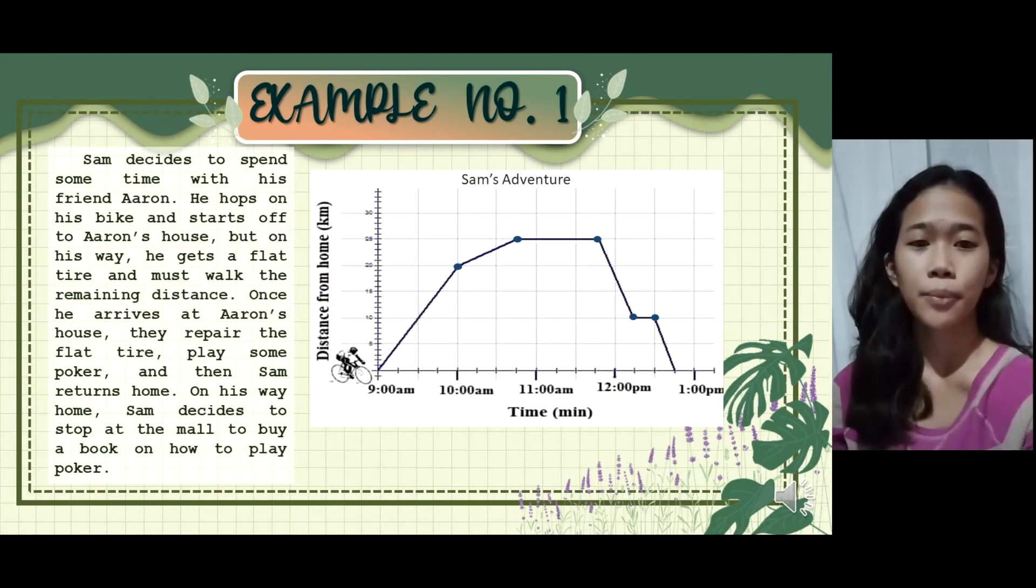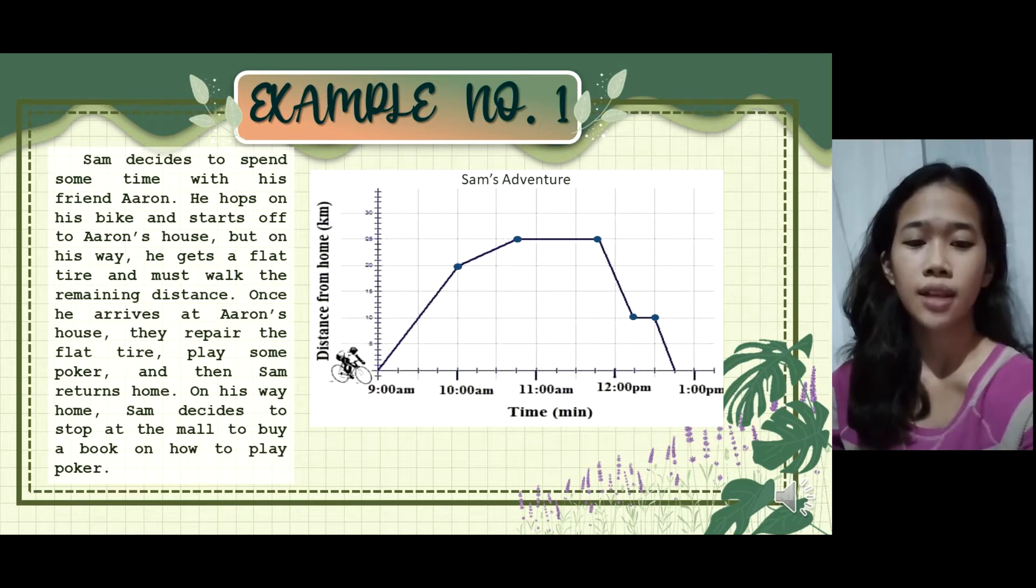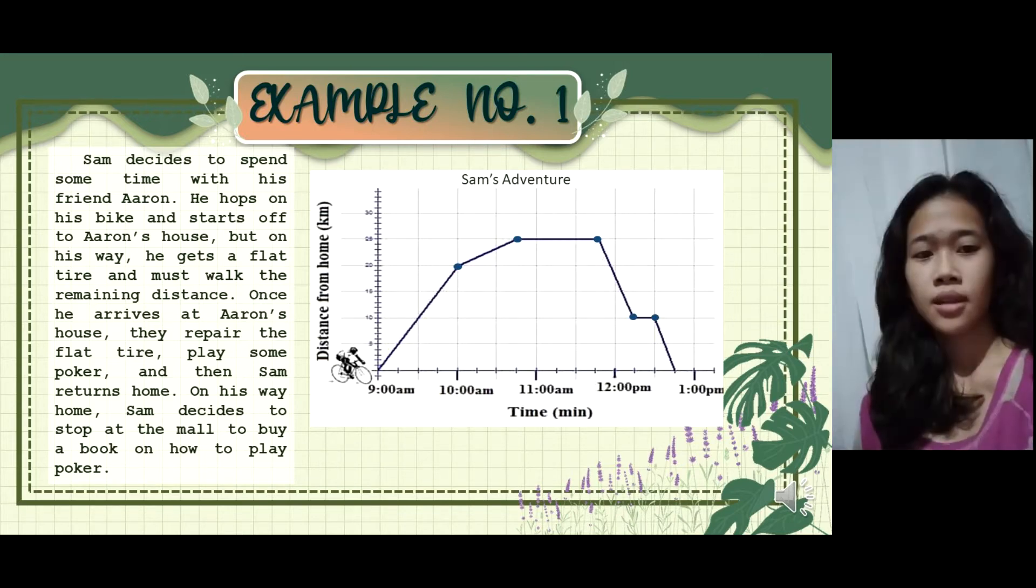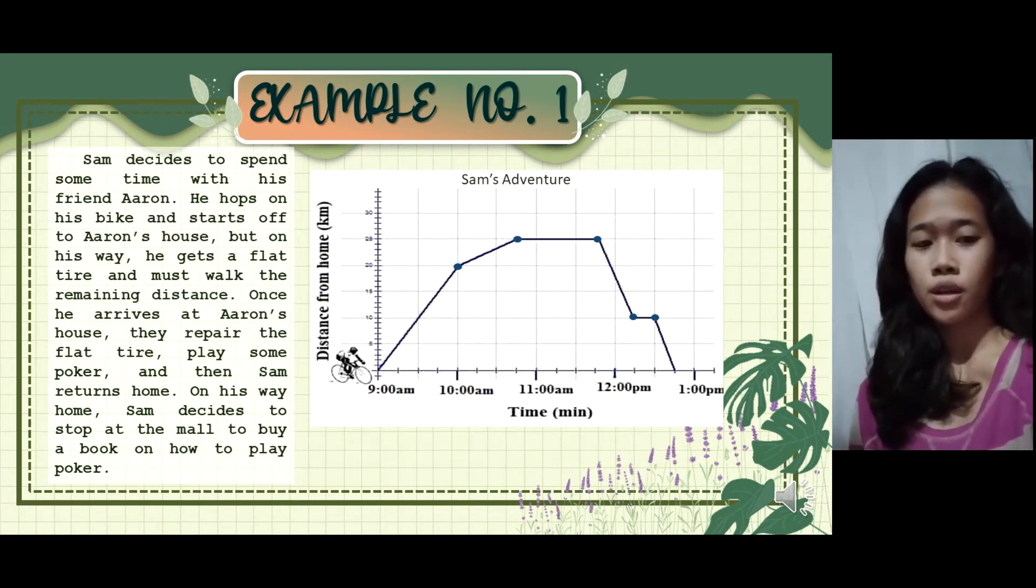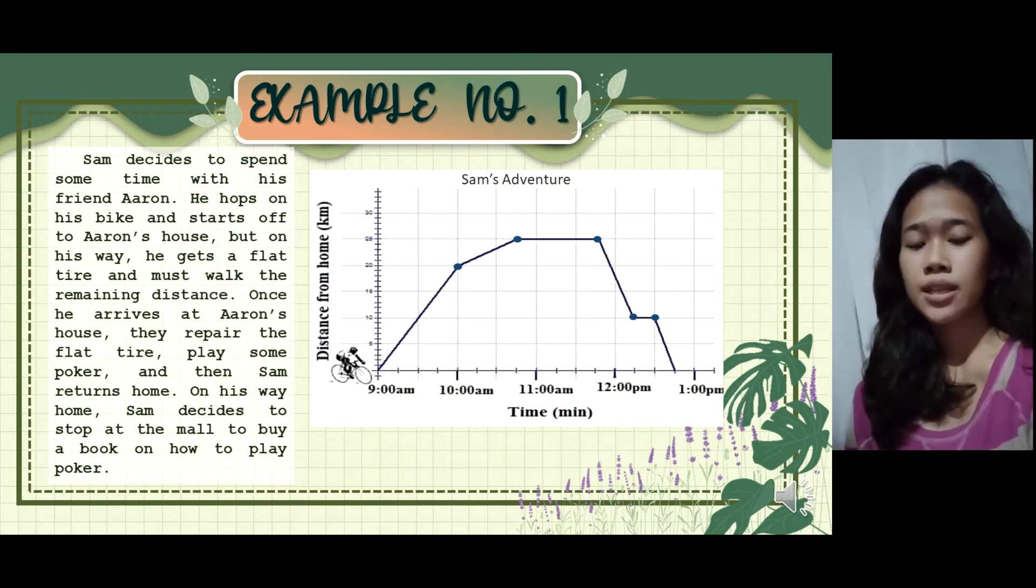Here are some samples of broken line. Sam decide to spend time with his friend Aaron. He hops on his bike and starts off the Aaron's house. But on his way, he gets a flat tire and must walk the remaining distance. Once he arrives at Aaron's house, they repair the flat tire, play some poker and then Sam return to home. On his way home, Sam decides to stop at a mall to buy a book on how to play poker. The following graph represents Sam's adventure.